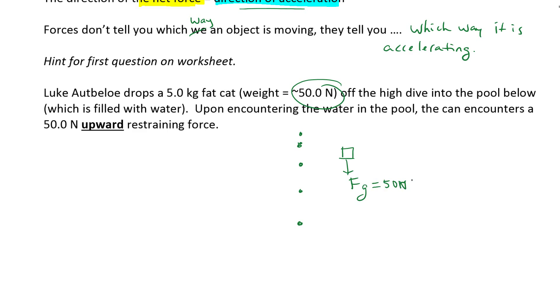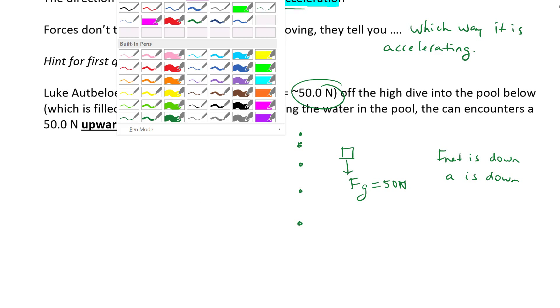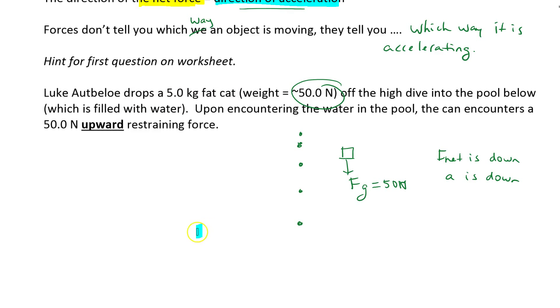And so if I look at this I would say F net is down and that tells me that the acceleration is down. And look at this thing accelerating. You see the dots getting farther apart. This is about the point at which it hits the water. I will try to make some nice little water here.